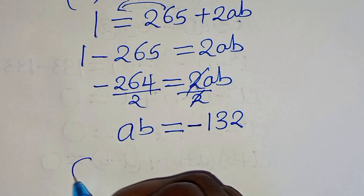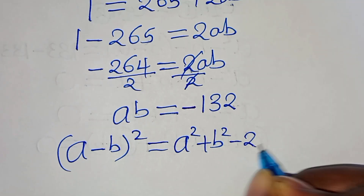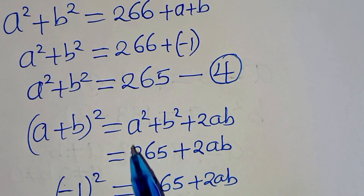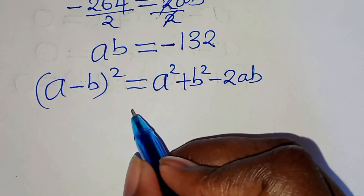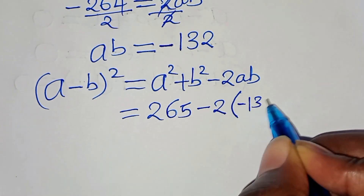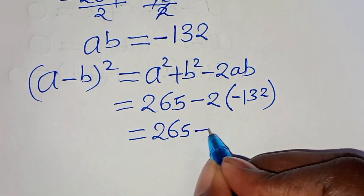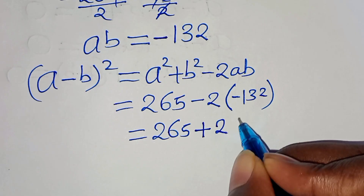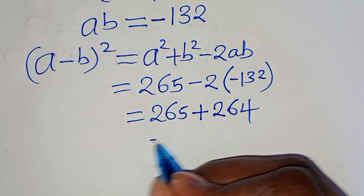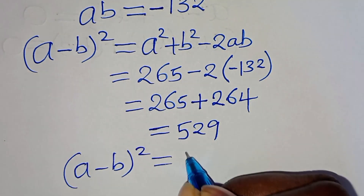Since we have ab equals minus 132, we can find (a minus b) squared. This equals a squared plus b squared minus 2ab. Substituting equation 4: (a minus b) squared equals 265 minus 2 times (minus 132). That is 265 minus (minus 264), which equals 265 plus 264, equals 529.